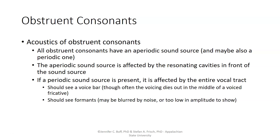All obstruent consonants have an aperiodic sound source and may also have a periodic one. The aperiodic sound source is affected by the resonating cavity in front of the sound source — meaning between the sound source and the lips where the sound emerges from the mouth. If a periodic sound source is present, it is affected by the entire vocal tract.